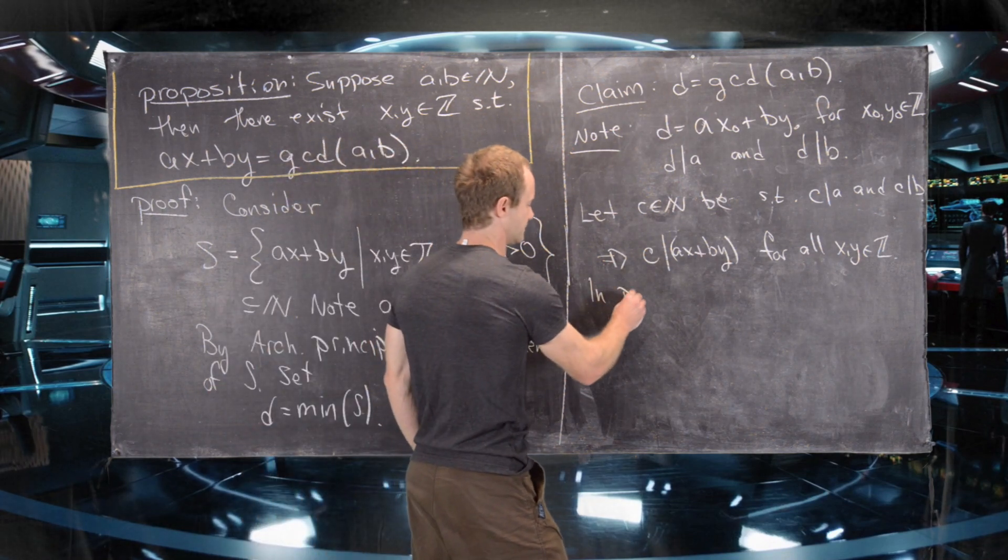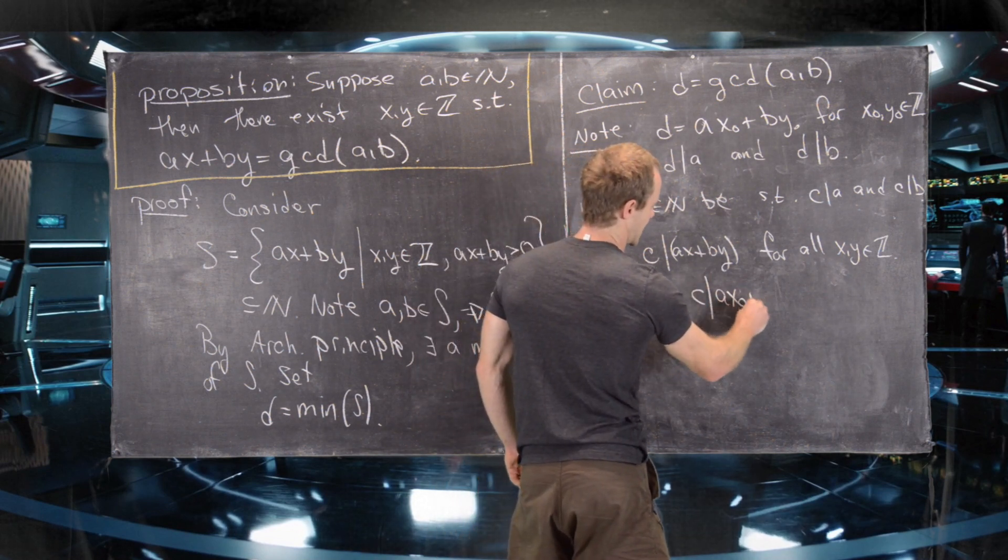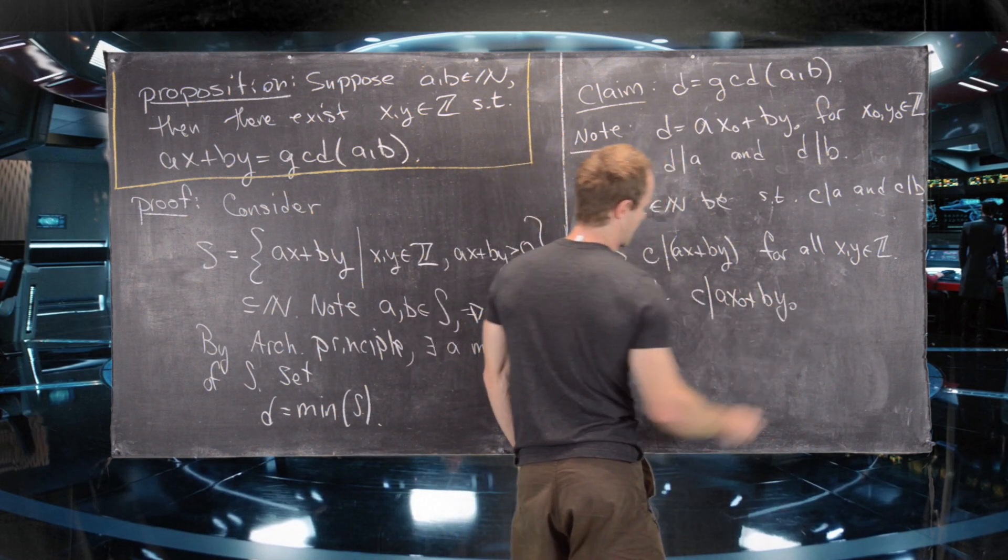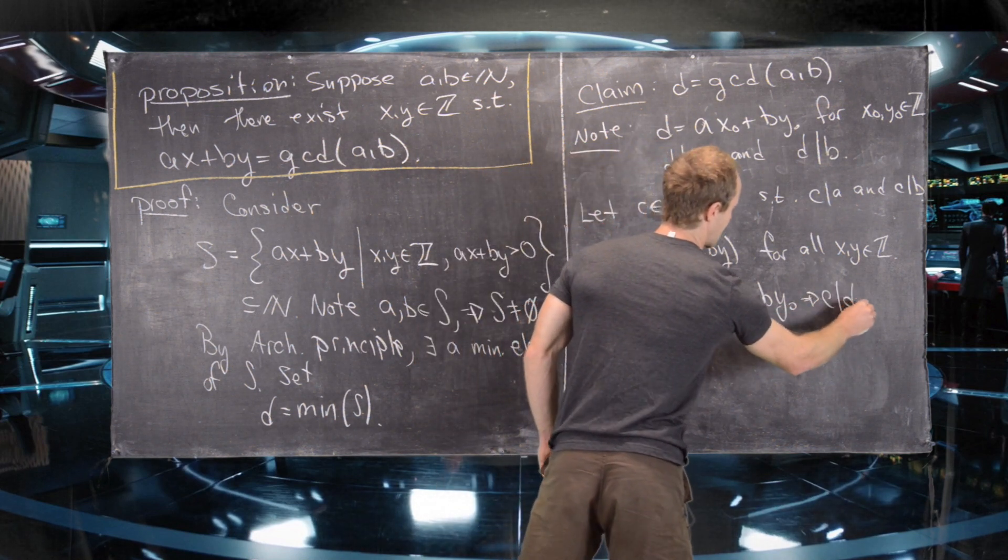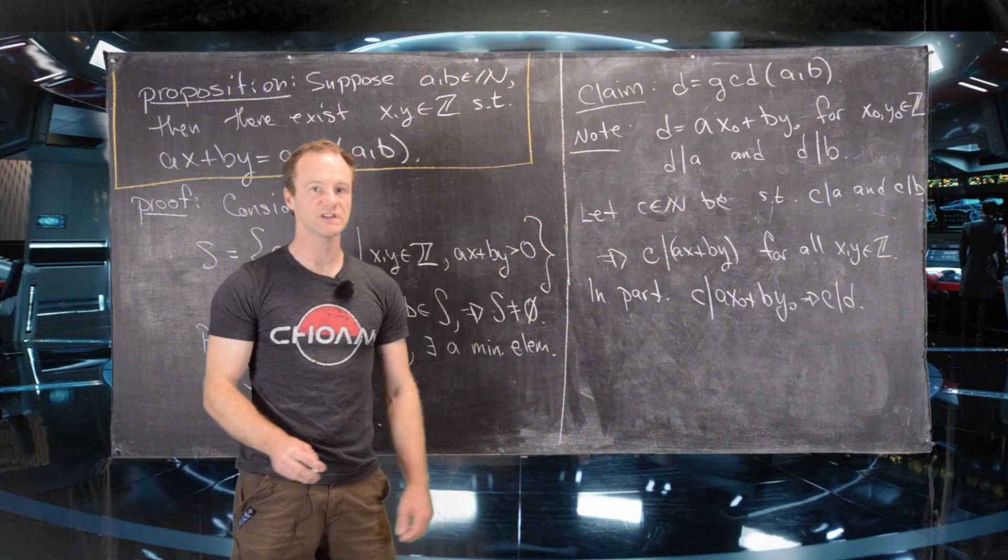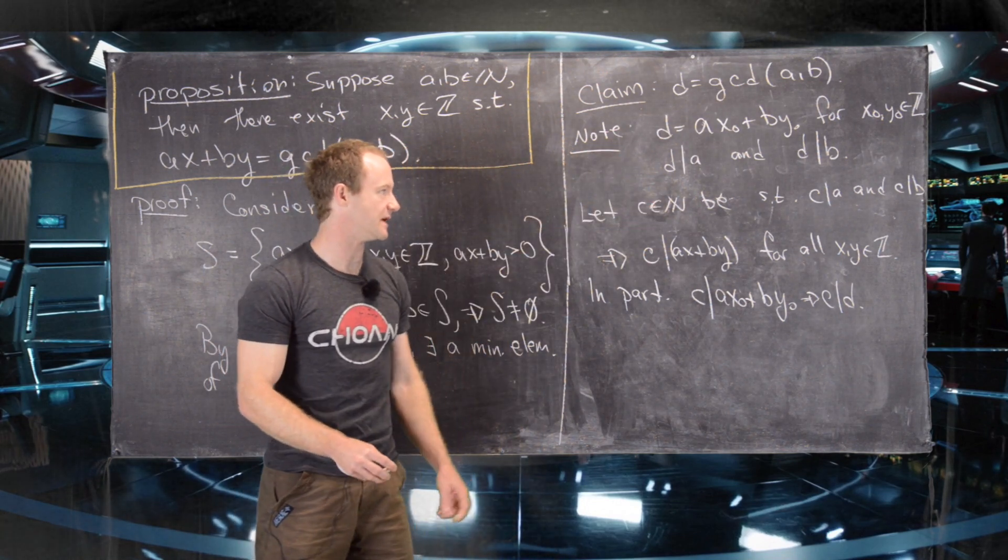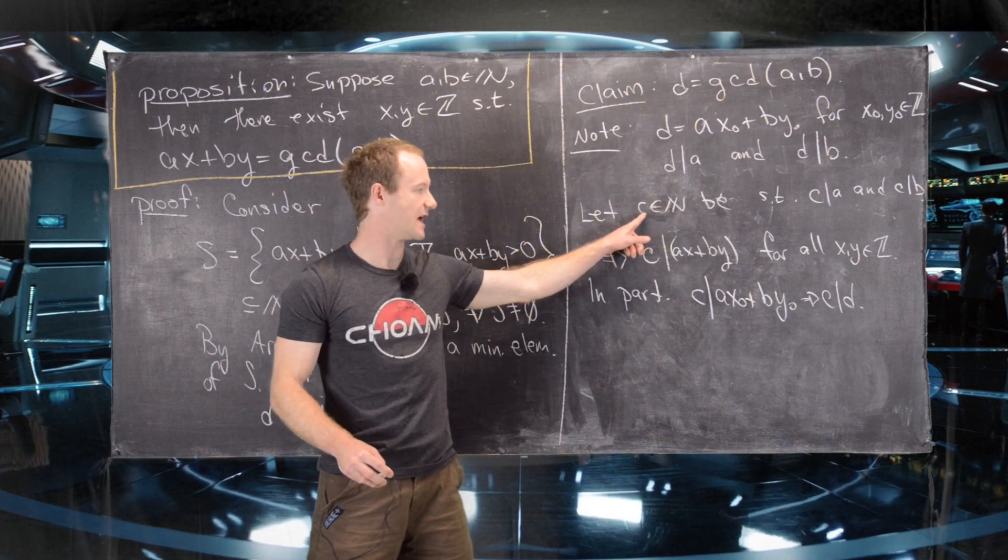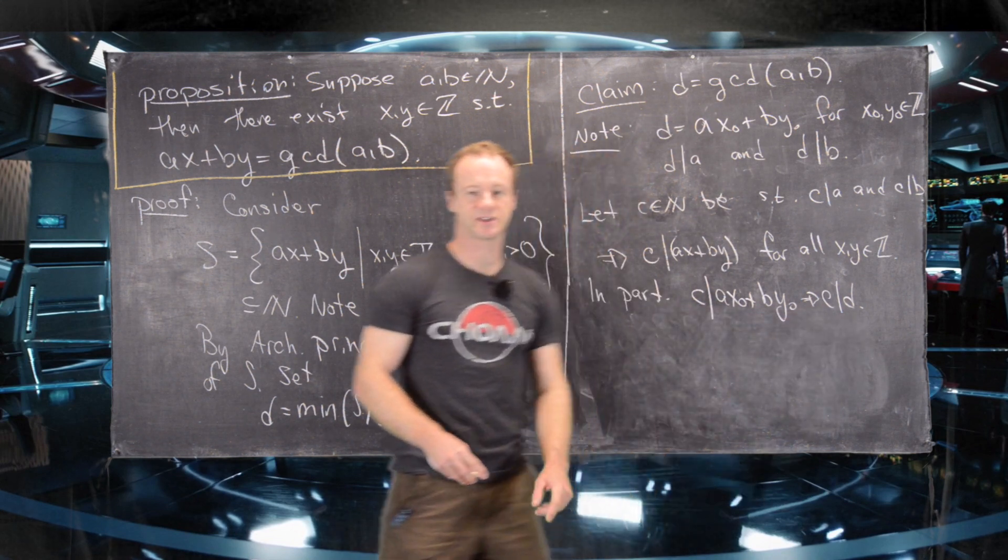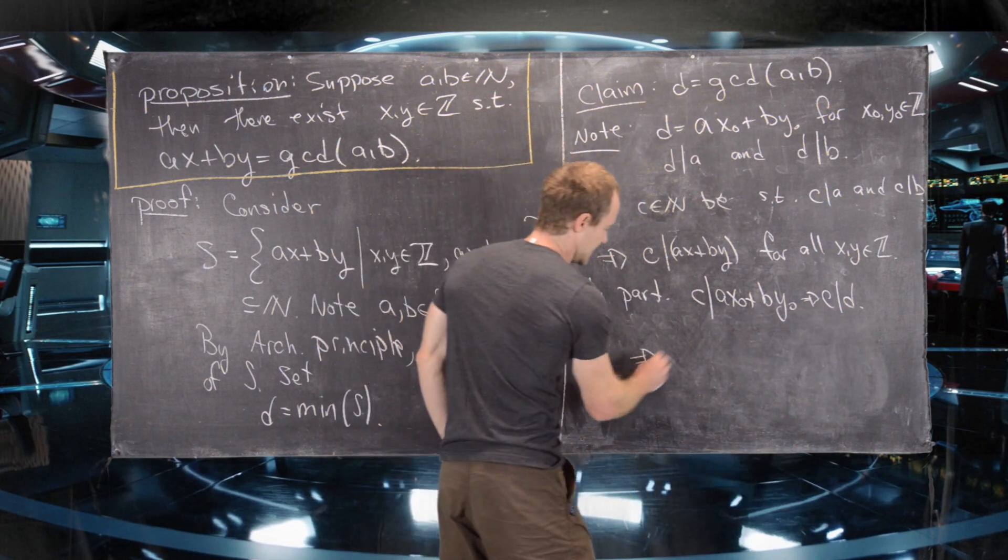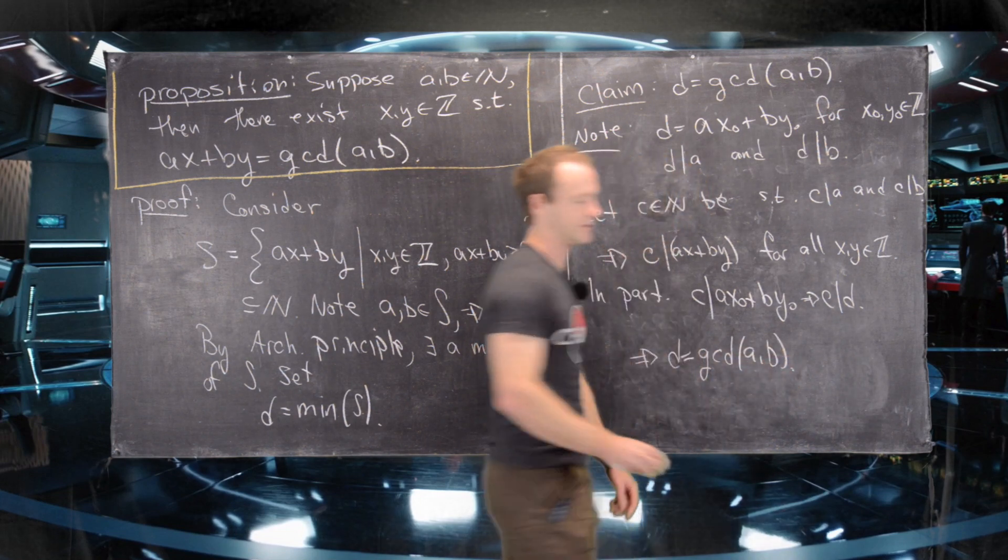So in particular, C divides AX0 plus BY0, which is the same thing as saying that C divides D. So let's see what we have. We have D as a common divisor of A and B. And then if we take another common divisor of A and B, C, then C divides D. So what that means is that D is indeed the greatest common divisor of A and B.